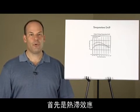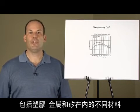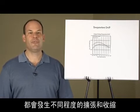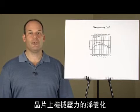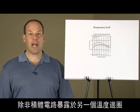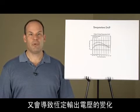First is thermal hysteresis. As an IC changes temperature, the different materials, including plastic, metal, and silicon, all expand and contract differently. The result is a change in mechanical pressure on the die due to the thermal cycle. That change in turn causes a change in output voltage that is constant unless the IC is exposed to another temperature cycle.